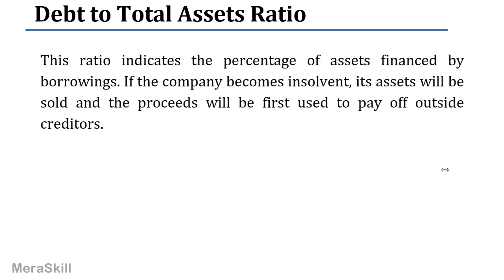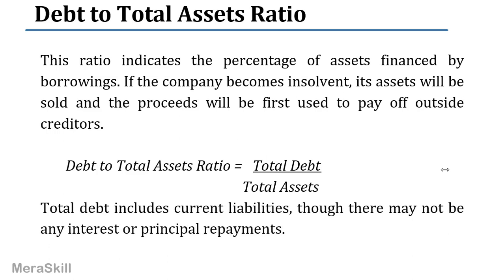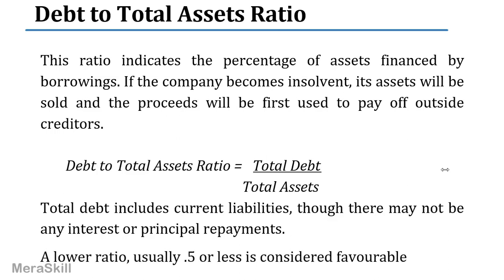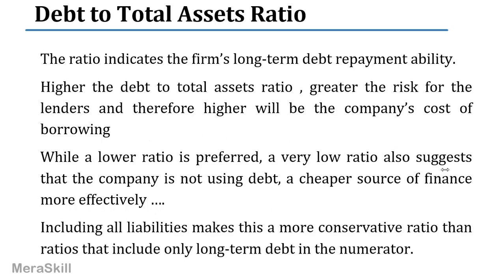Another ratio is debt to total assets, indicating the percentage of assets financed by borrowers. If the company becomes insolvent, the assets would be sold and the proceeds are first used to pay off the creditors. When the company goes into liquidation, sell the assets, the money produced goes first to pay off the creditors; after everything is settled, shareholders receive what remains. Total debt — including long and short term — divided by total assets. A lower ratio, usually around 0.5, is considered favorable. Higher the debt to total assets, the greater the risk to lenders.